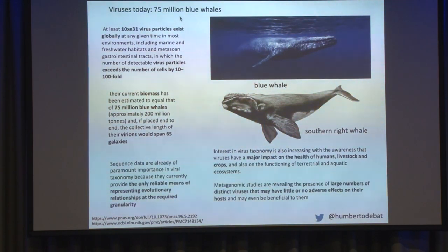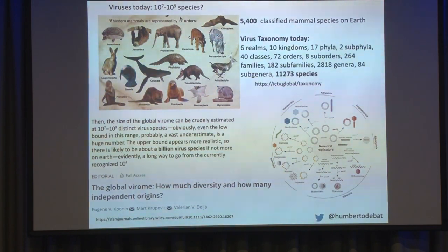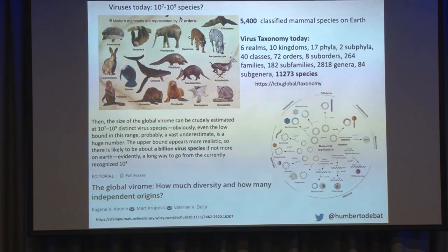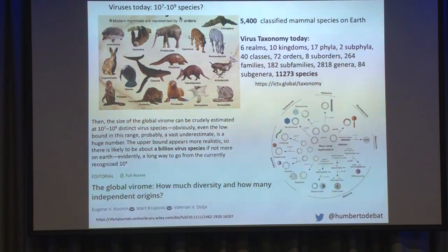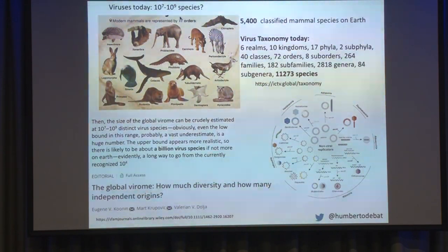How many virus species are there? In the world there are around just over 5,000 species of mammals, and every year they identify maybe a handful of new species. In the case of viruses, as of today there are only 11,000 species that have been formally classified, recognized by the International Committee of Virus Taxonomy. They are biological replicators even if they may not be truly alive.